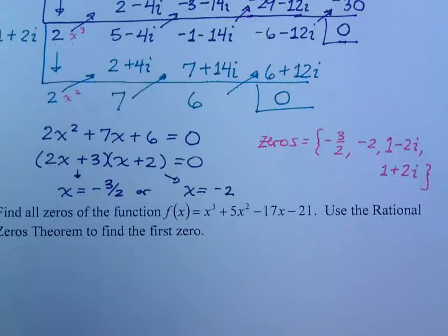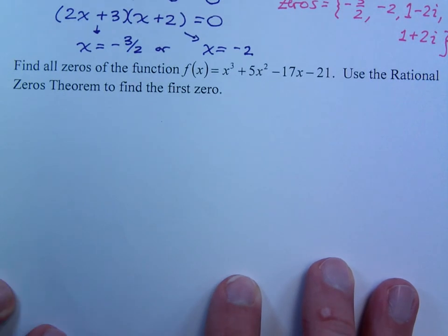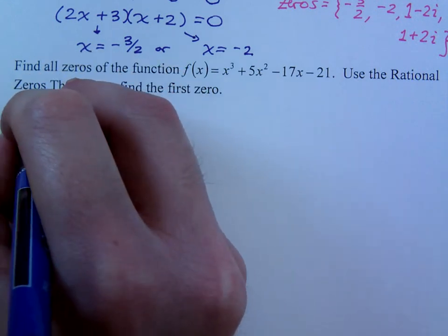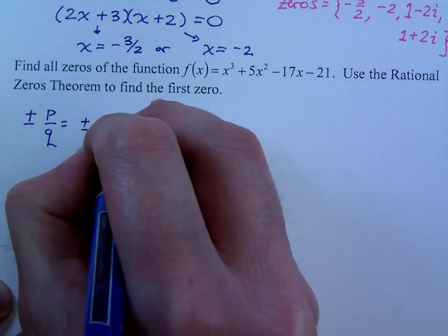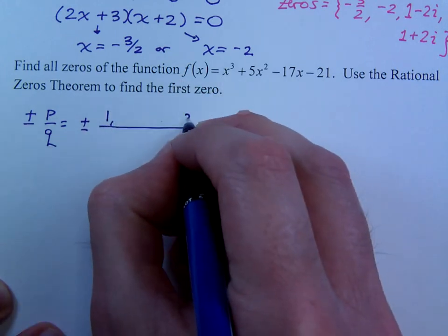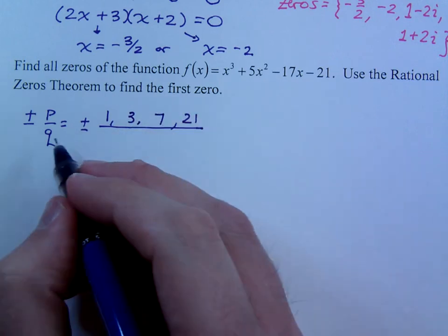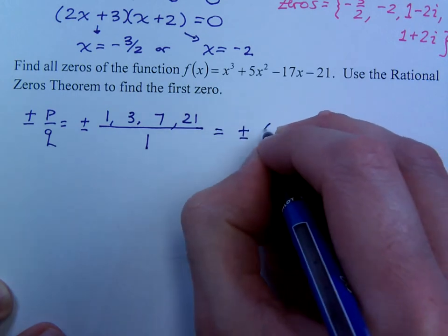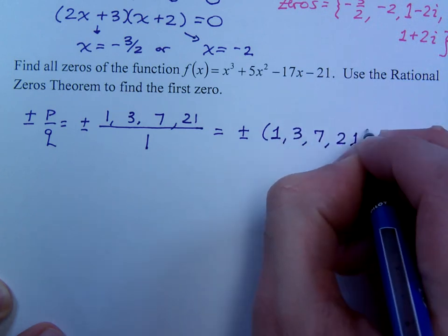Now, this next problem doesn't give you anything. It just says, use the rational 0s theorem. So, this is where you have to figure out what are the possible rational 0s to use. So, when we look at this, you know, plus or minus p over q. p is a factor of your constant term, which is 21. So, the factors there are 1 and 21, or 3 and 7. Your lead coefficient is just 1, so that's the only factor you can have. So, these are the possible rational 0s. Plus or minus 1, 3, 7, or 21.